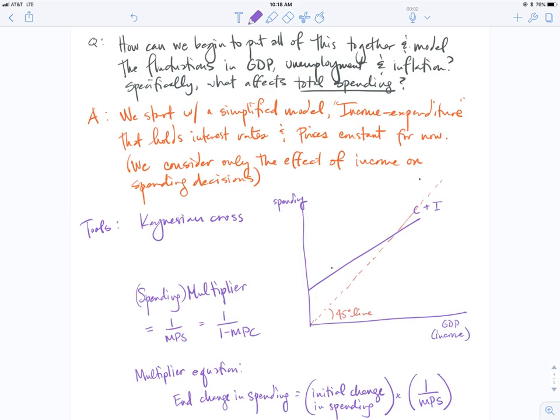Finally, putting this all together, we need to start building a full model. This is our first toy model of the economy that helps understand the fluctuations. What affects total spending? We're going to focus on the spending side because that is the mainstream explanation for what causes fluctuations: it's fluctuations in spending. The income-expenditure model is what we did, and it is holding interest rates and prices constant for now.